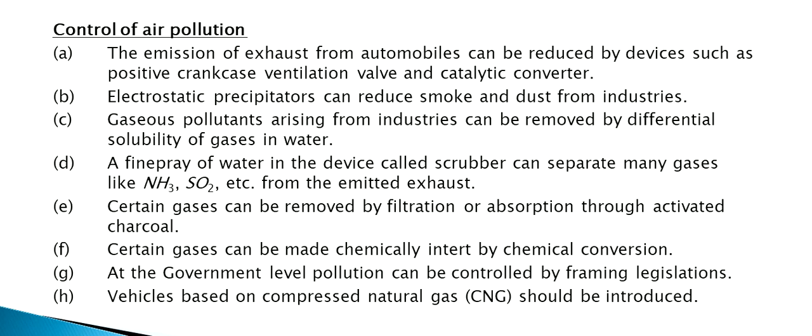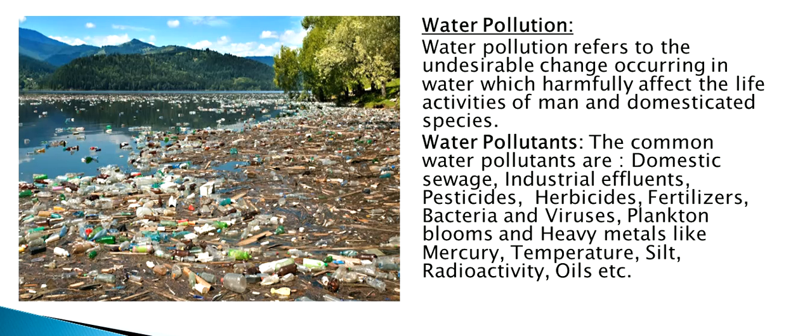A fine spray of water in a device called a scrubber can separate many gases like NH3 and SO2 from the emitted exhaust. Certain gases can be removed by filtration or absorption through activated charcoal. Certain gases can be made chemically inert by chemical conversion. At the government level, pollution can be controlled by framing legislations, and vehicles based on compressed natural gas should be introduced.